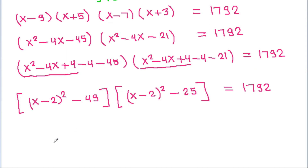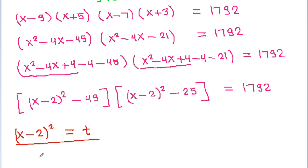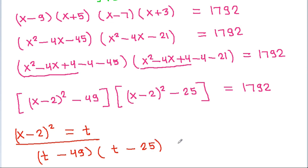Let t equal (x-2)². Then the expression becomes (t - 4)(t - 21), but with our grouping: (t - 49)(t - 25) is equal to 1792.